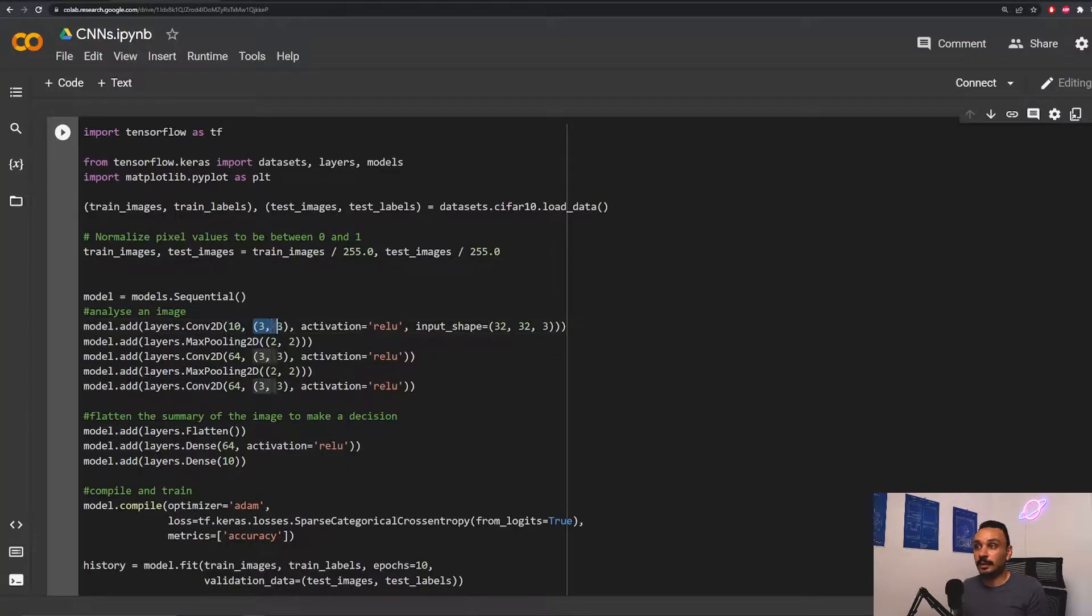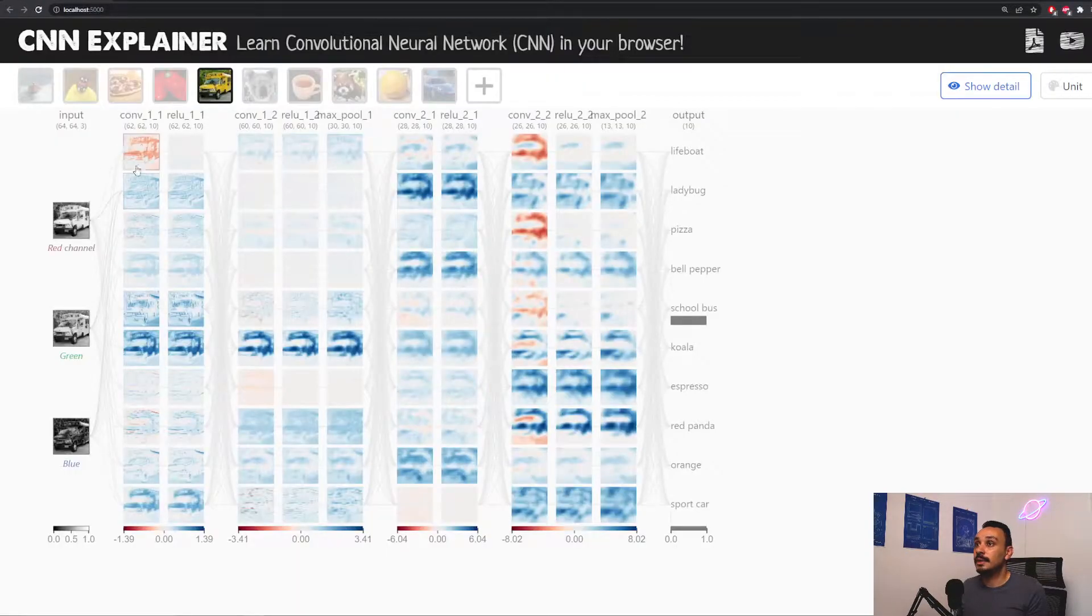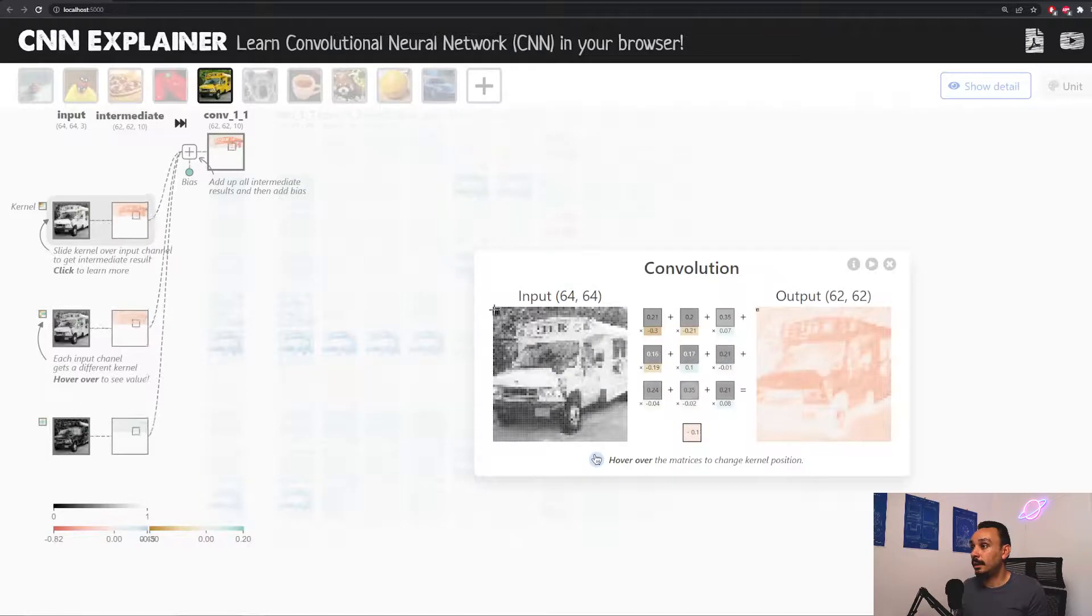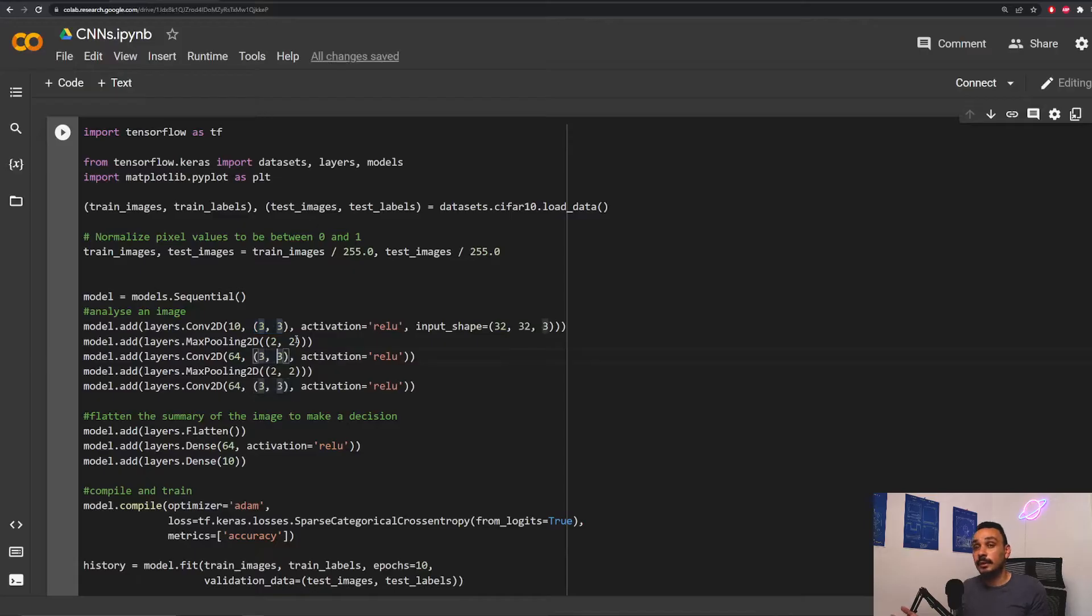The next argument that you need to define is the size of the kernel. We've defined here a 3x3 kernel, which is exactly what we saw when we looked at this image over here. This has a 3x3 kernel that summarized the information. You can also change the shape of the kernel. I encourage you to experiment with the size of the kernel to find the best one that suits the task that you're trying to solve.